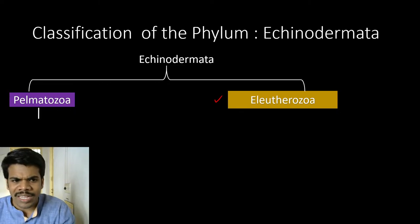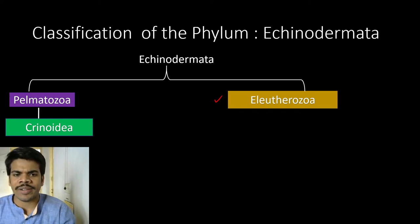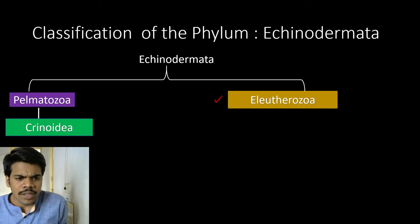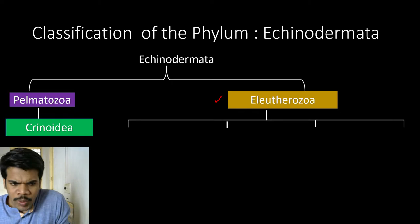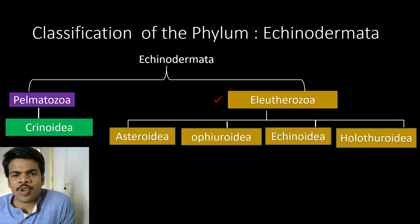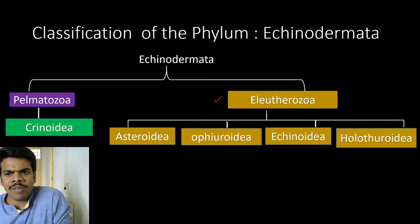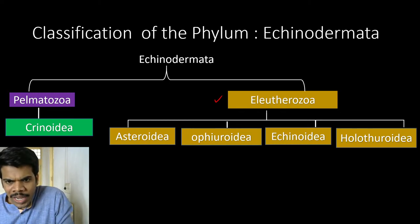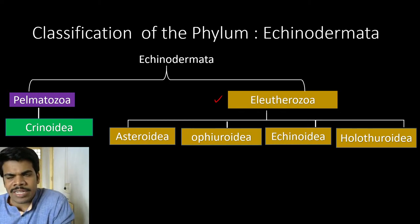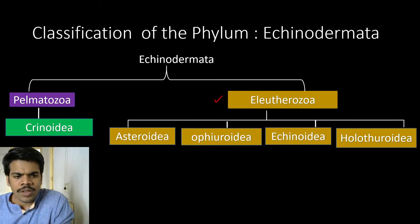The subphylum Pelmatozoa has only one class: that is Crinoidea. Eleutherozoa consists of four classes: Asteroidea, Ophiuroidea, Echinoidea, and Holothuroidea. These are the classes under subphylum Eleutherozoa. Today I will complete the entire syllabus according to Animal Diversity One. You can prepare for the pre-final examination.